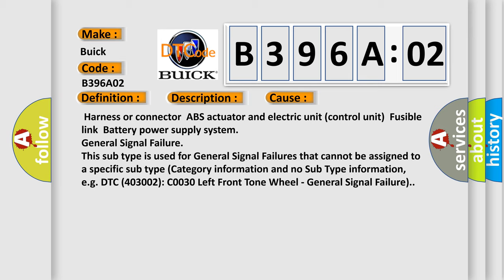Harness or connector, ABS actuator and electric unit control unit, fusible link, battery, power supply system, general signal failure. This subtype is used for general signal failures that cannot be assigned to a specific subtype category information and no subtype information, e.g. DTC 400 and 3002 COO30 left front tone wheel, general signal failure.